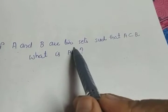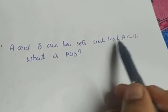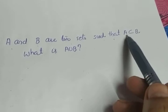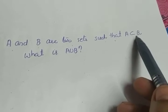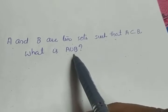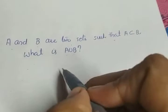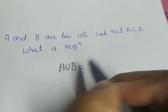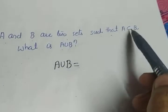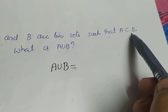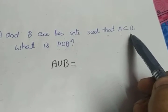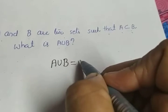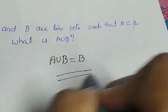If A and B are two sets such that A is a subset of B, what does A union B equal? If one set is a subset of the other, the bigger set will be the union. Since A is a subset of B, B is the bigger set, so A union B will be equal to B.